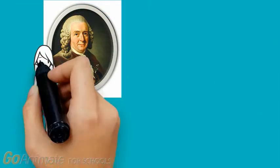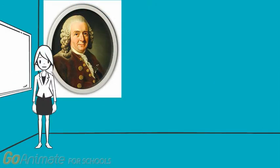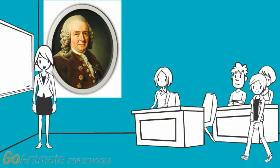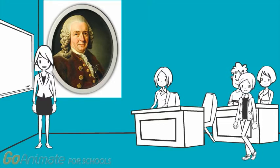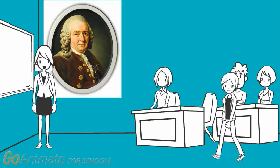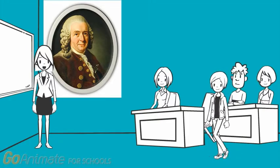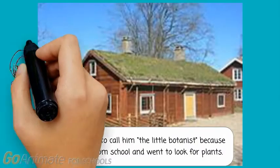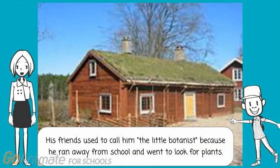Carl Linnaeus was born on May 23rd, 1707. He was a Swedish scientist who laid the foundations of modern taxonomy — the science of identifying, naming, and classifying organisms. The great Swedish biologist Carl von Linné was born in a small village. He comes from a family of farmers and priests, and his passion for nature was evident from his childhood.